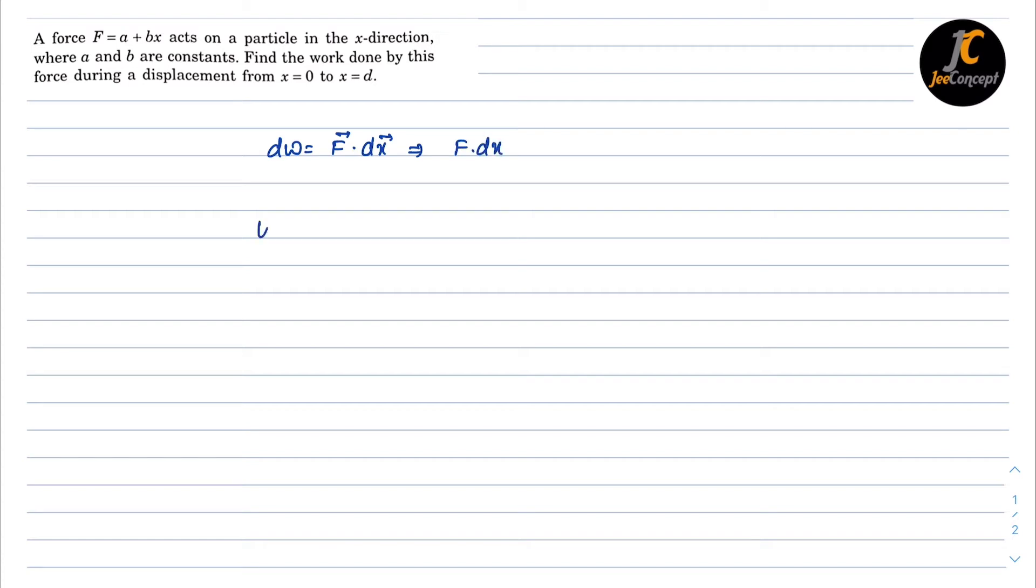Now to get the total work done we will integrate this from the limit x is equal to 0 to d, F dx, that means A plus Bx times dx.